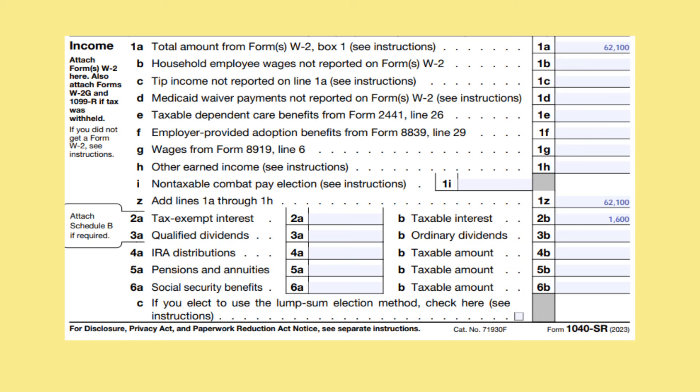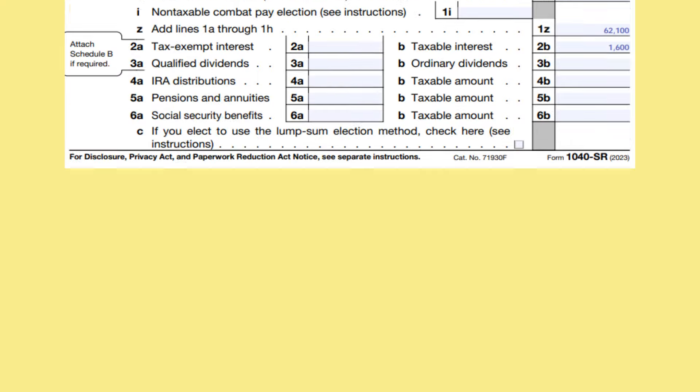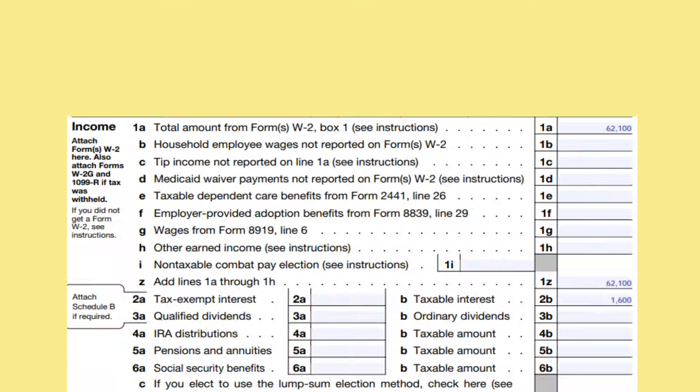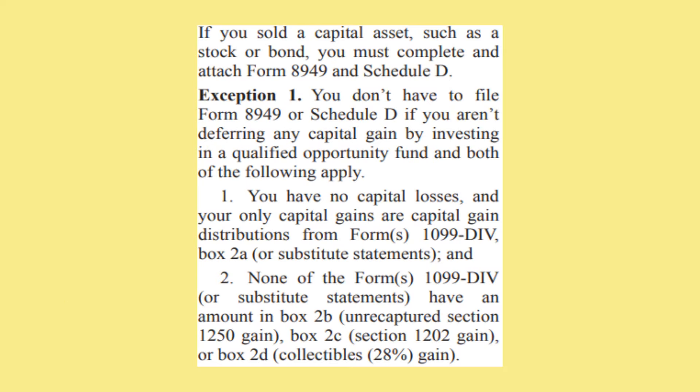Line 6C is for the lump sum election method. If any of your benefits are taxable for the 2023 year and they include a lump sum benefit payment from an earlier year, by checking this box you may be able to reduce the taxable portion. On line 7, put your capital gains or losses — an example of this is when you sell stock. Typically when you sell a capital asset such as a stock or bond, you need to file Schedule D and Form 8949, but there are some examples where you do not have to do this.